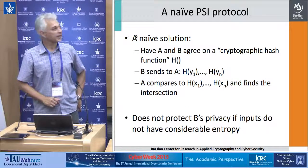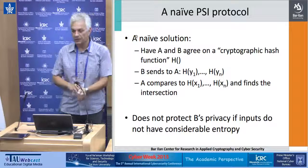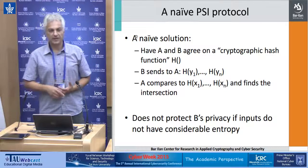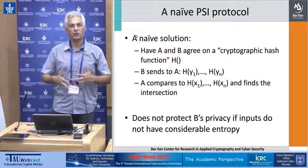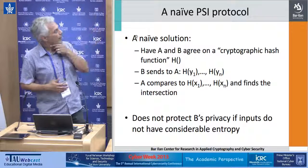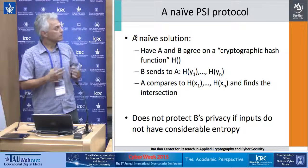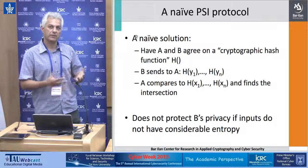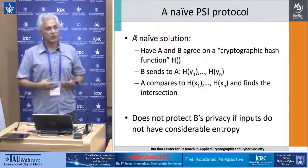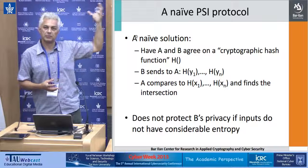Here's a naive PSI protocol. When I describe this problem to people, they usually come up with the following solution: the parties use a one-way hash function h. Bob computes the hash of its inputs, h(y1) up to h(yn), and sends it to Alice. Alice computes the hash of her inputs and compares the two sets. If the same input is in both Alice's and Bob's set, the hashes will be the same, and Alice identifies the intersection. Since h is a one-way function, Alice can't reverse it to get the actual input y1. So this seems secure.